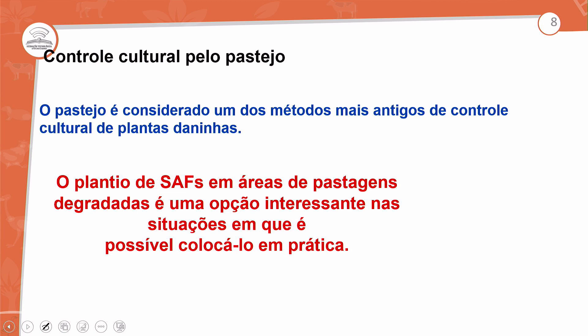O pastejo é considerado um dos métodos mais antigos de controle de plantas daninhas. A utilização de animais favorece o processo de controle. Os animais mais eficientes são os ruminantes, mas também pode-se utilizar aves, caprinos e ovinos. O plantio do sistema SAF em áreas de pastagens degradadas é uma opção interessante para reestruturação.